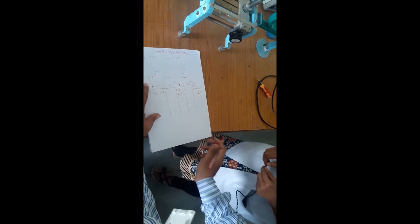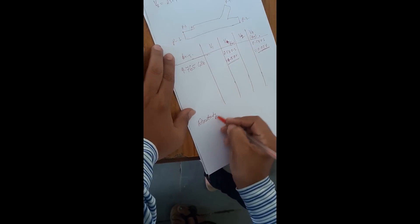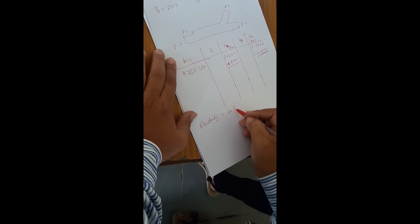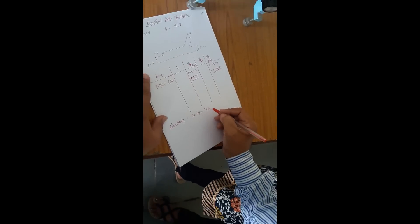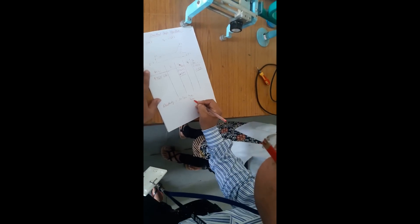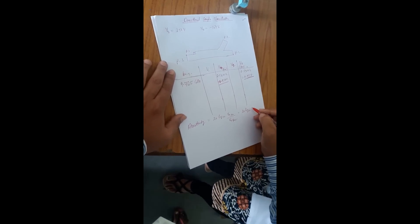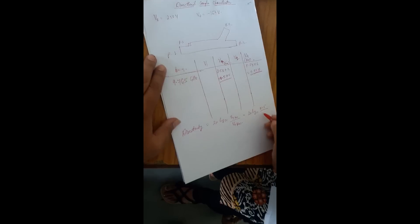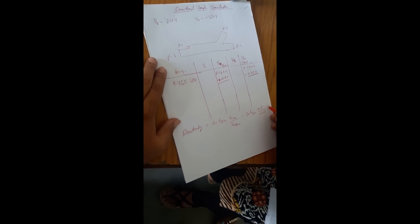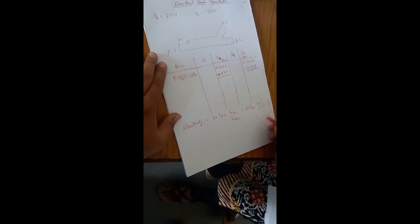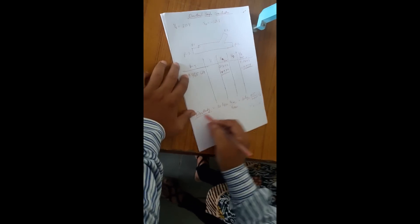This is the voltage we are getting in the reverse direction. So we can calculate the directivity. Directivity will be 20 log10 of V in the forward direction divided by V in the reverse direction. This is one calculation of your directivity.